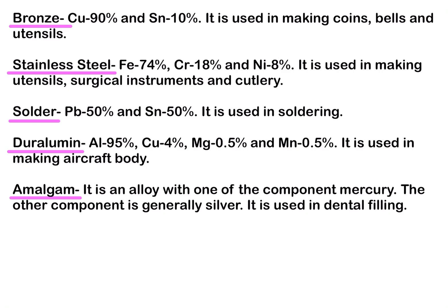Lastly, we study about amalgam. Amalgam is an alloy in which one of the components is usually mercury, and the other compound is generally silver. It is used in dental fillings. These are some of the common alloys that we have studied, though there are other alloys that are also more commonly used.